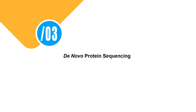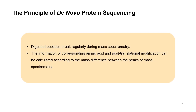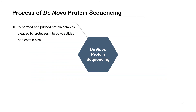If you need to study proteins not present in a protein database, de novo protein sequencing is recommended. This method can identify novel peptides, proteins from unsequenced organisms, and antibody drugs. The principle of de novo protein sequencing is based on the fact that digested peptides fragment regularly during mass spectrometry. The corresponding amino acid information and post-translational modifications can be calculated according to the mass differences between peaks in the mass spectrum.